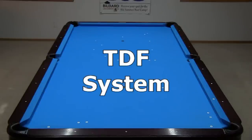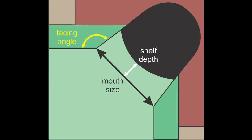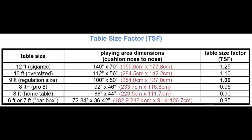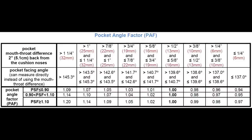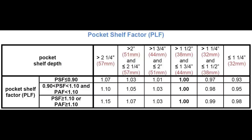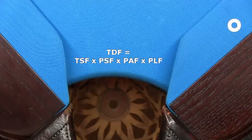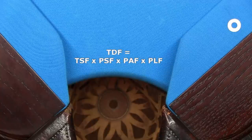The Table Difficulty Factor, or TDF, is a percentage measure of how difficult or easy a particular table plays based on table size and three simple corner pocket measurements. The TDF is calculated from four factors: Table Size Factor (TSF), Pocket Size Factor (PSF), Pocket Angle Factor (PAF), and Pocket Shelf Factor (PLF). By multiplying the four factors, you get the overall Table Difficulty Factor, which is a good measure of table toughness.